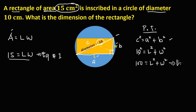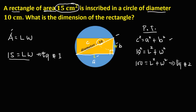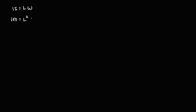Now we need to combine these two equations. Equation one is 15 equals length times width, and equation two is 100 equals l squared plus w squared. We are going to use the substitution method. From equation one, we isolate w by dividing both sides by l, so w equals 15 over l. We will substitute this into equation two.